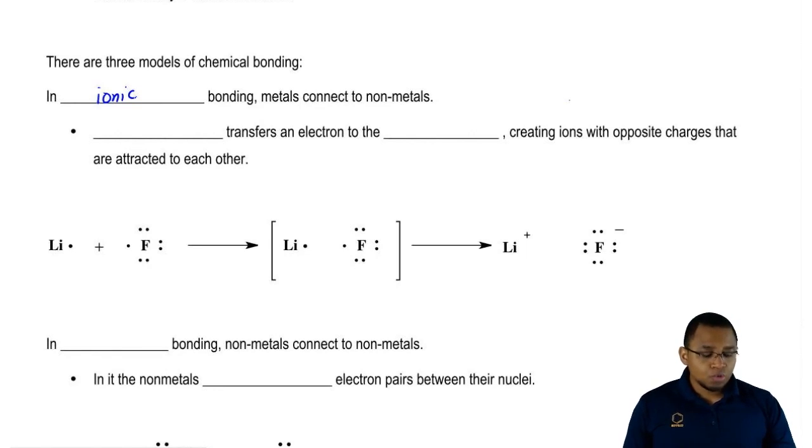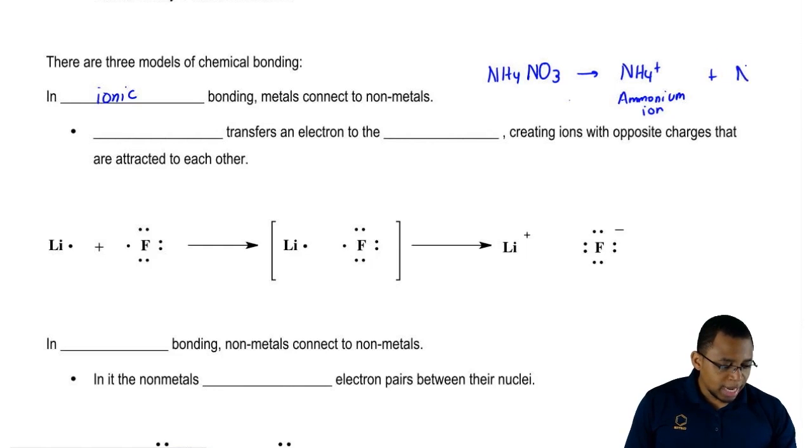Now remember, this isn't always true because we could have ammonium nitrate as an example. Ammonium nitrate is also ionic. It's ionic because it comes from combining the ammonium ion which is positive plus nitrate ion which is negative.